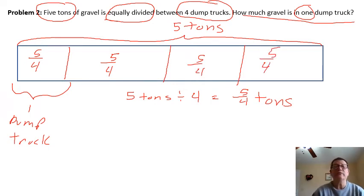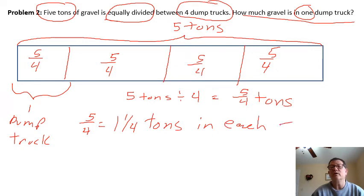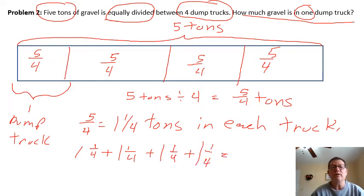We wouldn't usually say five-fourths tons. So we have five-fourths, which equals—three goes into five one time, one left over—so it would be one and one-quarter tons in each truck. If I wanted to check this, I could add one and one-quarter four times. I know I'd have four wholes and one, two, three, four-fourths, which equals five. So that checks.